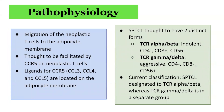In terms of the pathophysiology, it is thought to be due to the migration of neoplastic T-cells to the adipocyte membranes. This is thought to be facilitated by CCR5 on the neoplastic T-cells. Ligands for CCR5, such as CCL3, CCL4, and CCL5, are located on the adipocyte membrane, which allows for the migration of T-cells to this area.